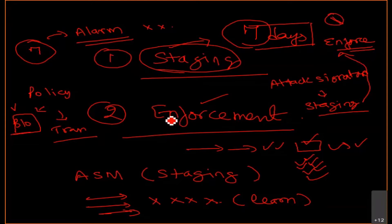ASM will log the request in transparent mode and generate a security violation. So if your policy is in the transparent phase only, as we created so far, it will not give you any kind of block. Blocking mode means your request will be logged and a violation will be generated showing why your request is getting blocked — you will get the reason in your event log.